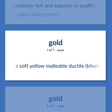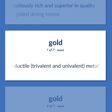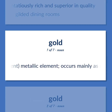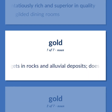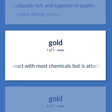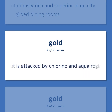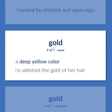Gold (element): a soft yellow malleable ductile trivalent and univalent metallic element; occurs mainly as nuggets in rocks and alluvial deposits; does not react with most chemicals but is attacked by chlorine and aqua regia. Gold (color): a deep yellow color — 'he admired the gold of her hair.'